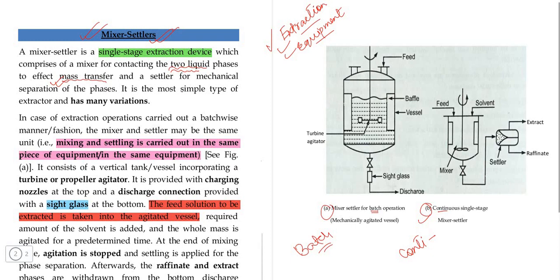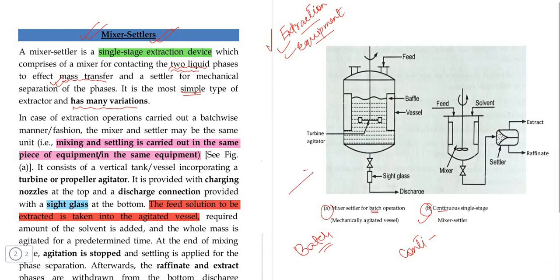This is a simple type of extractor and there are many different types of extractors. In the case of extraction operation carried out batch-wise, the batch-wise mixing and settling process may be carried out in the same unit — the same piece of equipment.